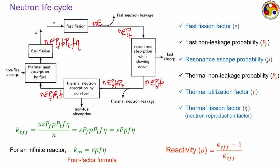Another important term is reactivity, denoted by ρ, defined as (k_eff − 1) / k_eff. For a critical reactor where k_eff = 1, reactivity equals 0. For a supercritical reactor where k_eff > 1, reactivity is greater than 0. For a subcritical reactor where k_eff < 1, reactivity is less than 0. So we can characterize the state of the reaction inside a nuclear reactor using either the multiplication factor or the reactivity.